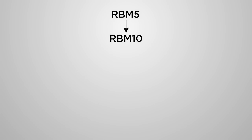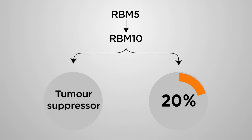RBM10, another RNA-binding protein, is in the same gene family as RBM5 and is mutated in 20% of lung cancers. It has been suggested that RBM5 and RBM10 may have similar functions, and that RBM10 may also be a tumor suppressor gene.